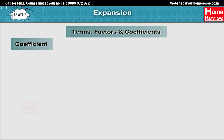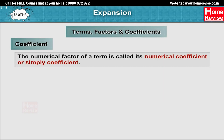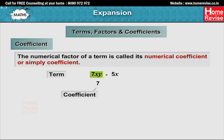The term 5 is made up of just one factor, i.e. 5. Coefficient: The numerical factor of a term is called its numerical coefficient or simply coefficient. Take the expression 7xy minus 5x. The coefficient in the term 7xy is 7 and the coefficient in the term minus 5x is minus 5.